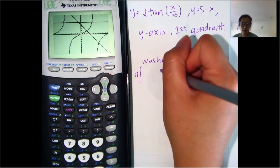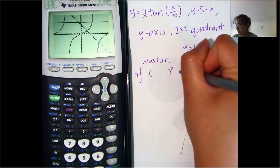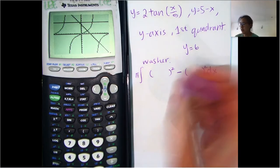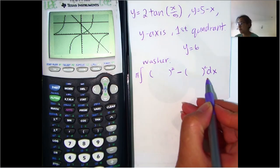Sorry, pi times the integral of some function squared minus some other function squared. So that will be the outer radius and that will be the inner radius.